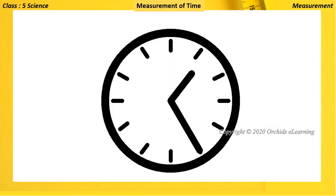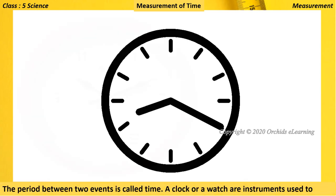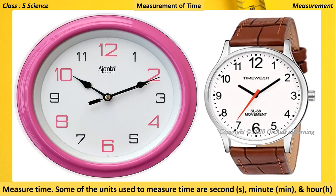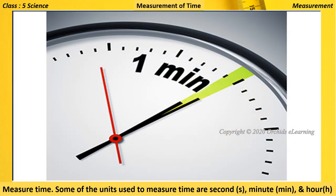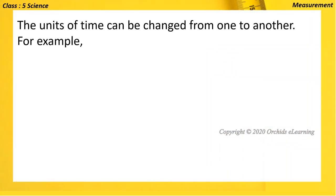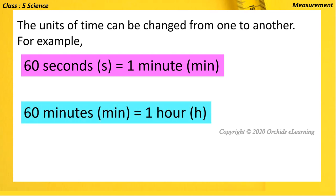Measurement of time: the period between two events is called time. A clock or a watch are instruments used to measure time. Some of the units used to measure time are second, minute, and hour. The units of time can be changed from one to another. For example, 60 seconds equals 1 minute, and 60 minutes equals 1 hour.